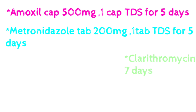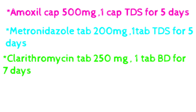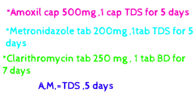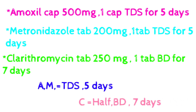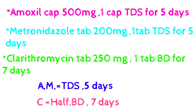For clarithromycin: tablet 250 mg, one tablet at a time, BD — two times a day — for seven days. To remember: amoxicillin and metronidazole are both TDS, three times a day, both given for five days — those are the common features. Clarithromycin is half the dose of amoxicillin: amoxicillin is 500 mg and clarithromycin is 250 mg. We give it BD and for seven days because the dose is less.